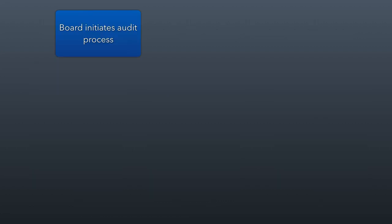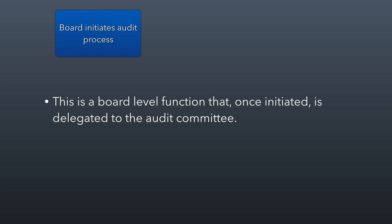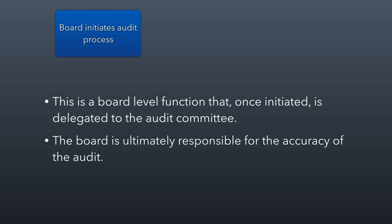The reason the board initiates this is because this is a strategic obligation — it's big-level stuff, and it should be the board that's in charge of the oversight involved with an audit. The board typically initiates it and delegates it to the audit committee. It's important to note that the board is ultimately responsible for the accuracy of the audit. It's their job to make sure the audit is done properly, and that if any issues arise in the audit process, the board makes sure those issues are resolved.